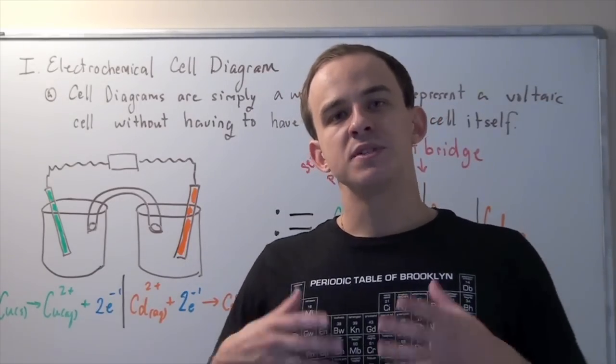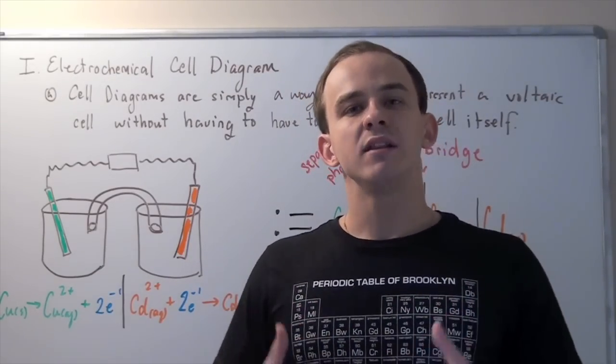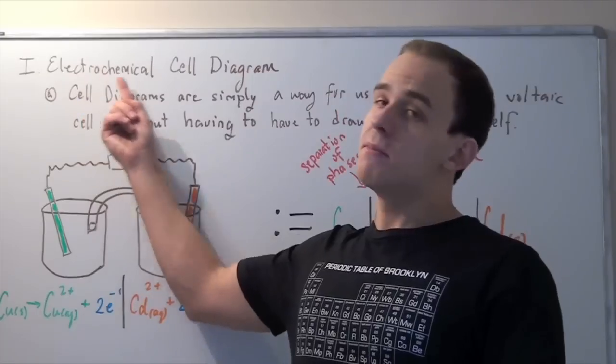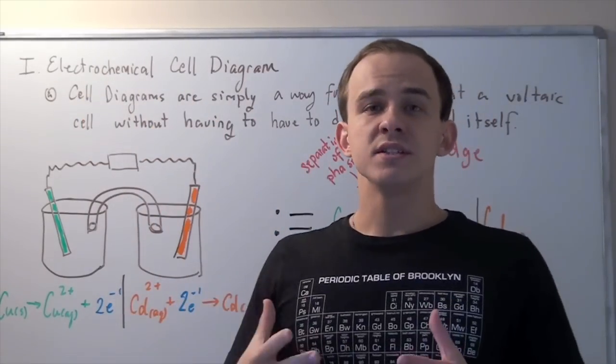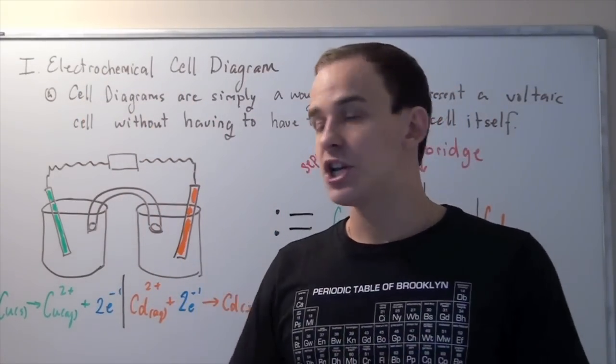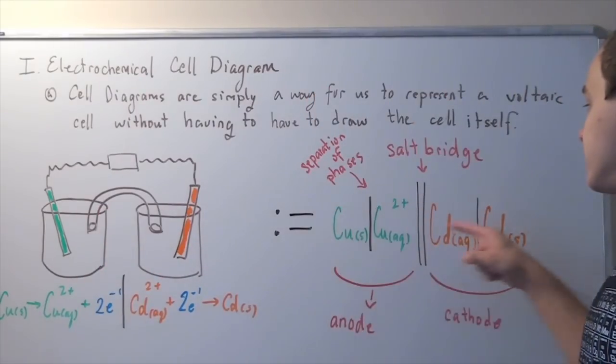Electrochemical cells can be represented using something called a cell diagram or an electrochemical cell diagram. This is simply a simplification of this drawing here, and it looks like this.